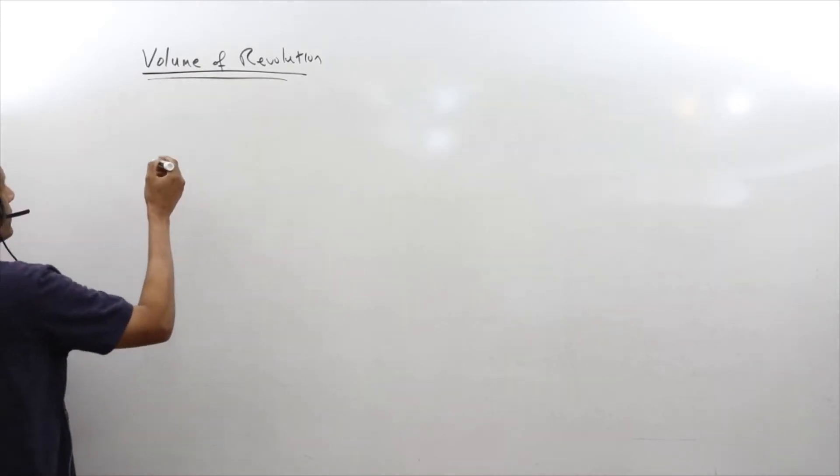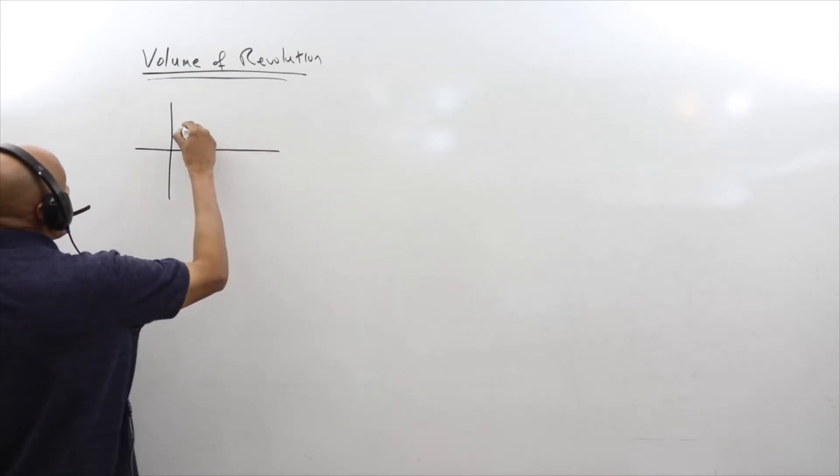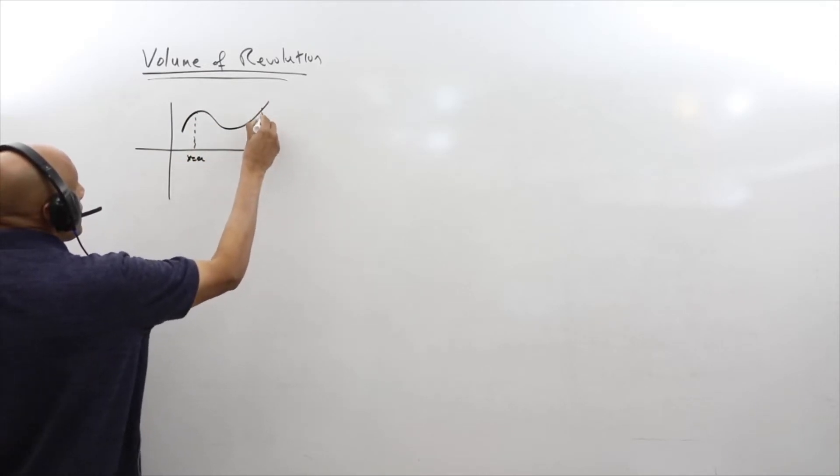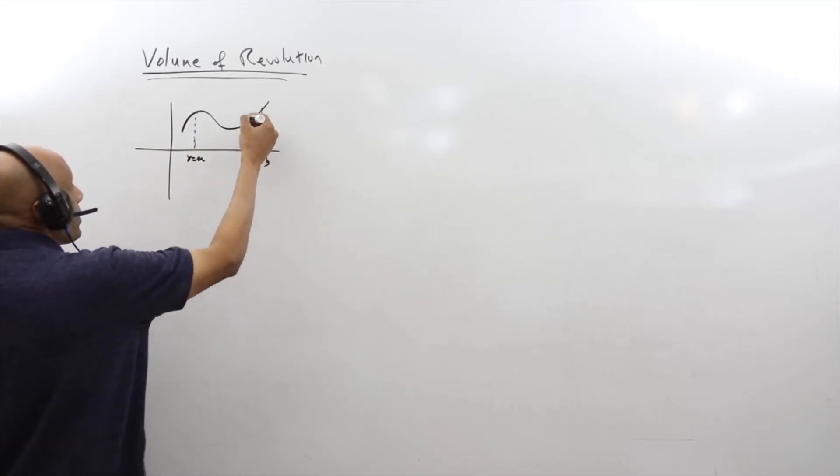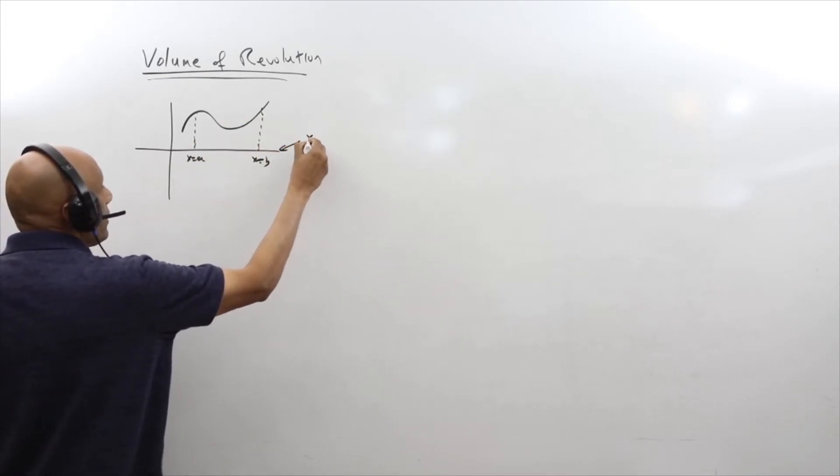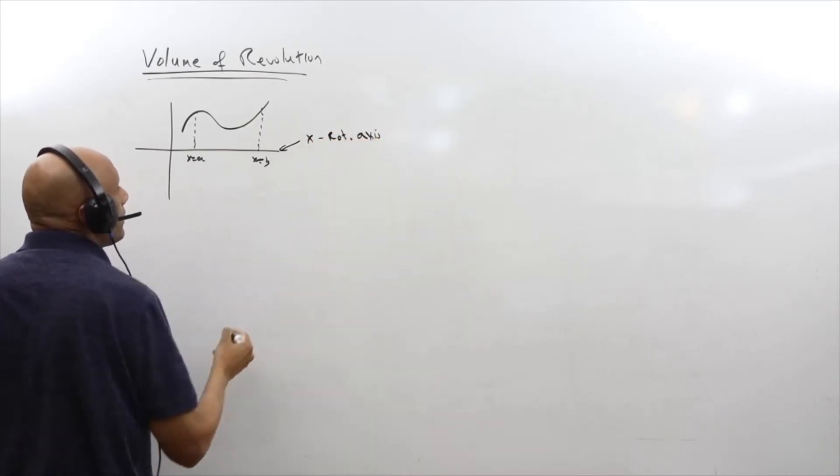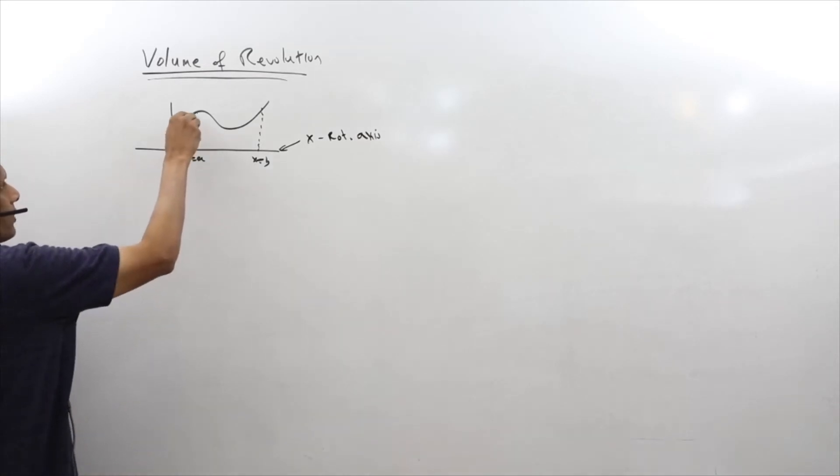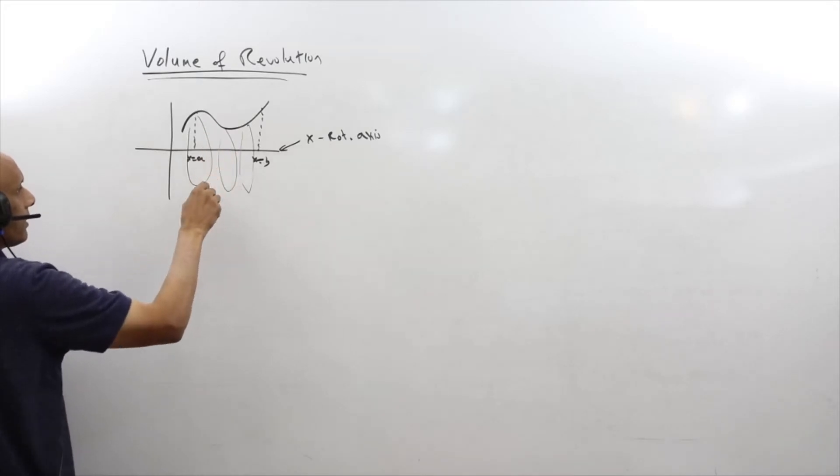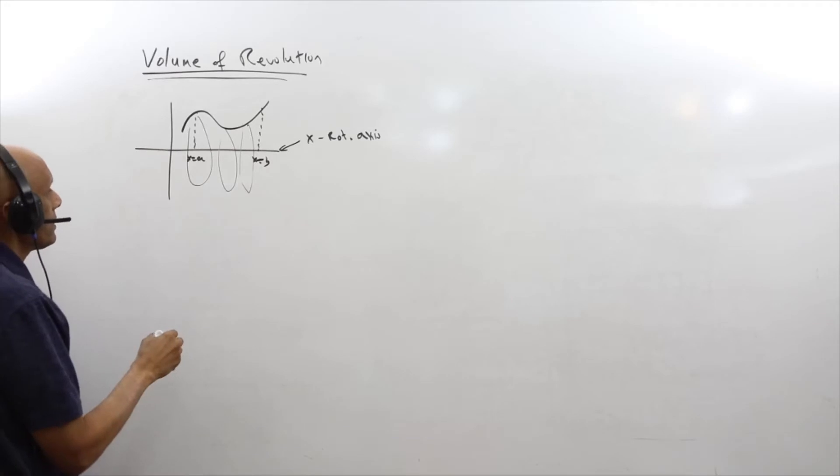The idea is that we have a curve taken from x equals a to x equals b, and we're going to take this curve and rotate it around the x-axis. So here is my rotational axis, and this rotational axis forms basically a volume. I'm not very good at drawing so I'll leave it at that. The question is how do I find the volume?